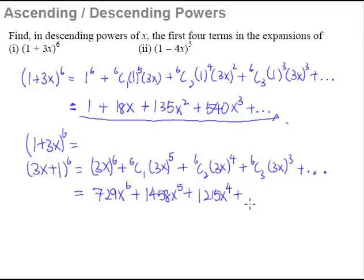So last one, from the calculator, 6C3 is 20, and 3^3 is 27, so 20 multiplied by 27, that will give us 540x^3. So this is how we expand in order to get a descending powers of x.